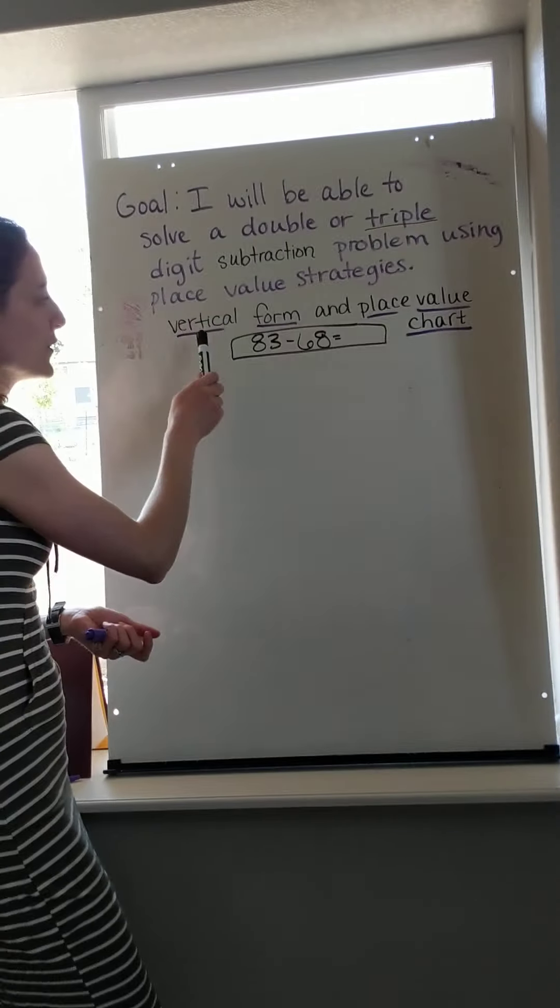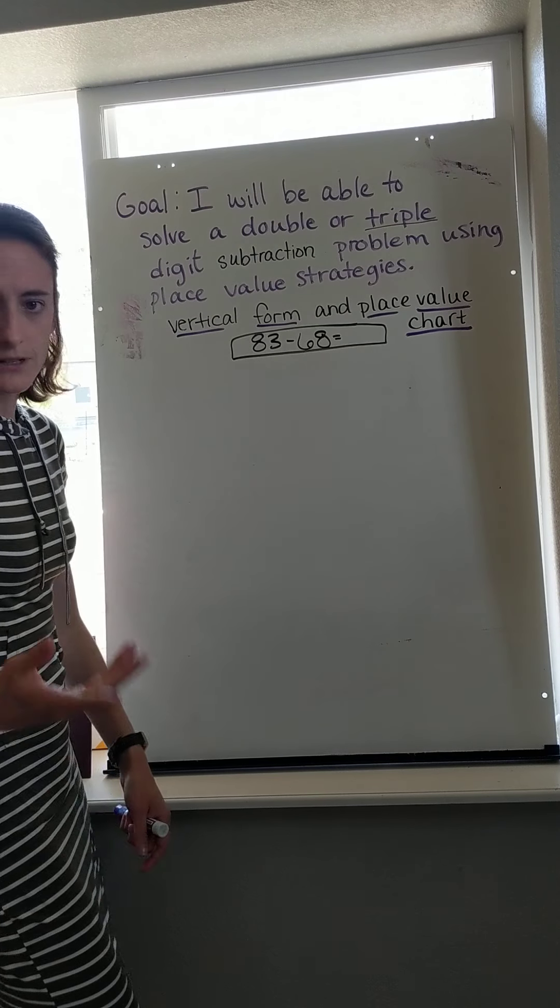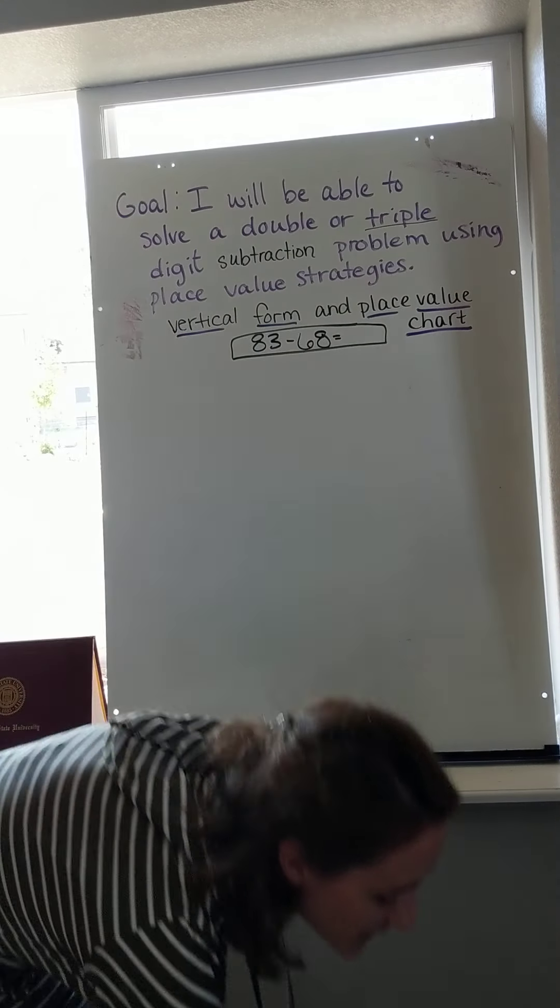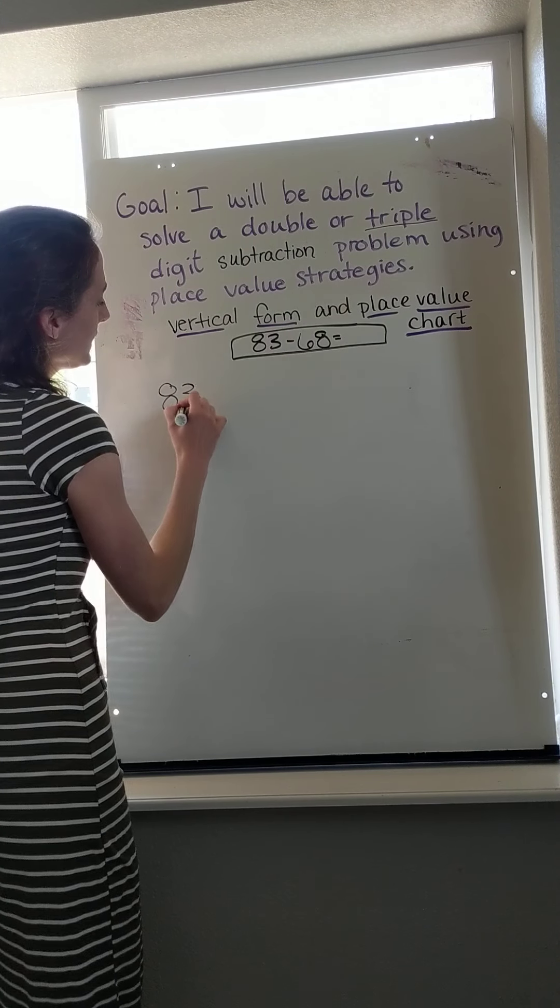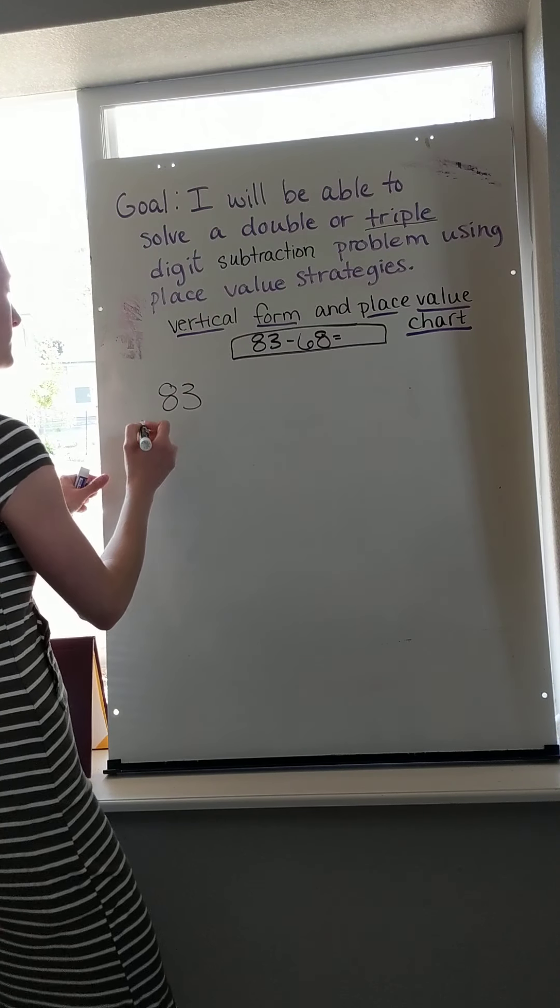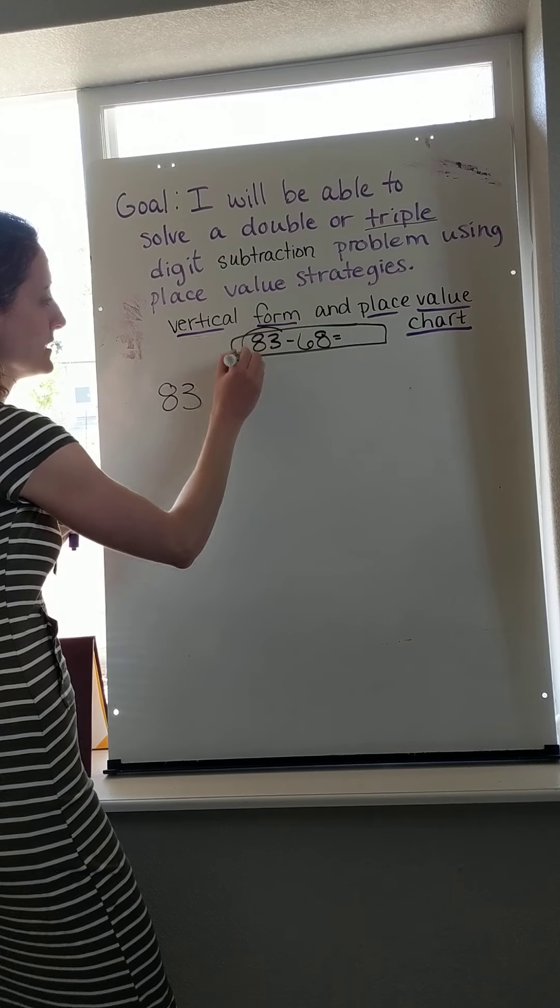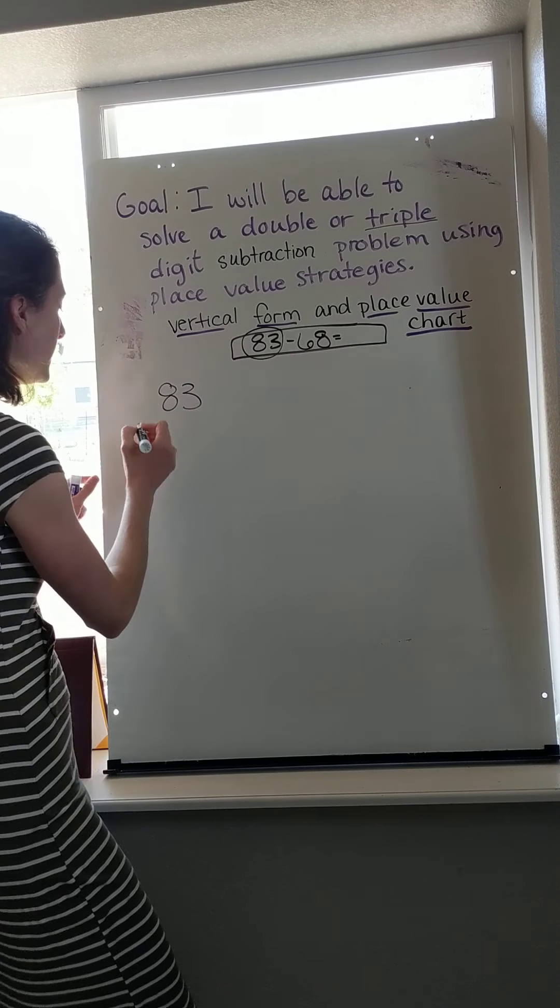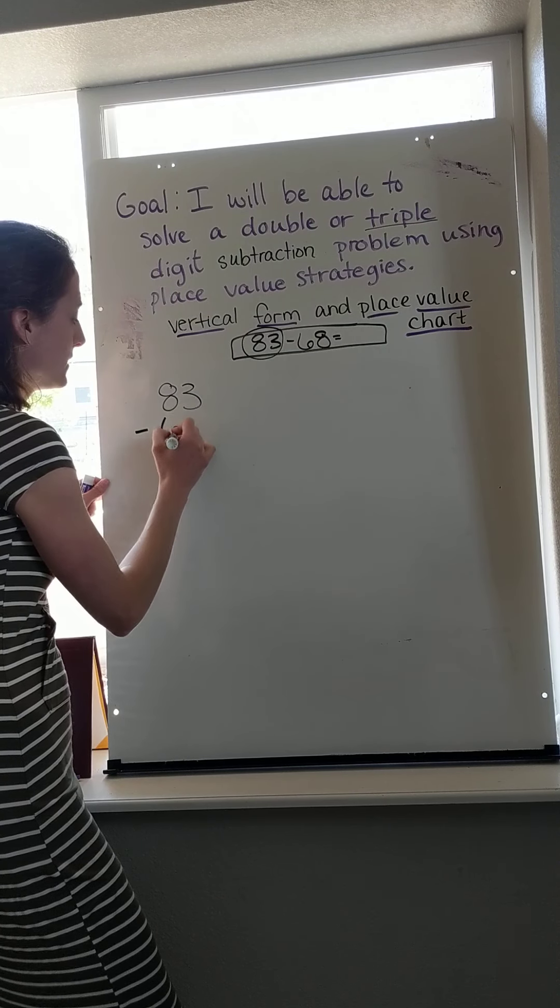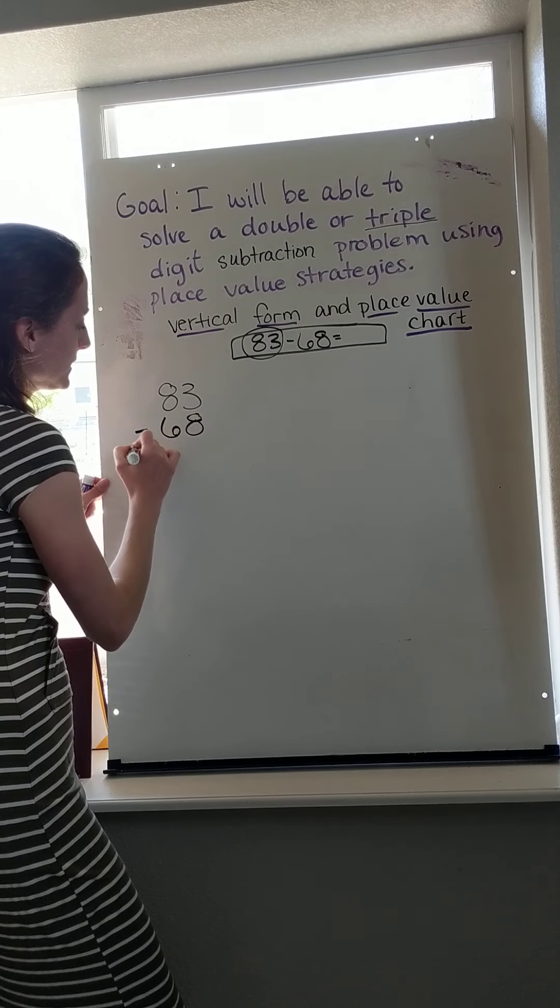So we are going to stack the numbers. Say we got like 83 on top. We need to make sure that this number is on top because when we have subtraction we start with the whole or the biggest number, and then we take away the part that we need to take out.